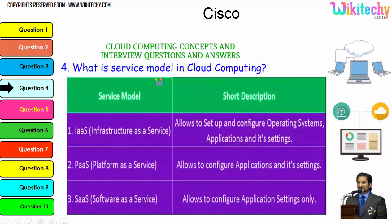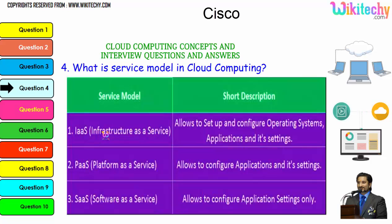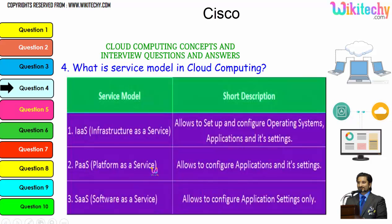What is the service model in cloud computing? There are three major service models. Infrastructure as a Service allows you to set up and configure the operating system, applications, and settings — you are given a server and can install whatever you want. Platform as a Service provides you with a specified operating system and lets you install any applications and settings. Software as a Service provides you with software, and you can manage whatever application settings you need.